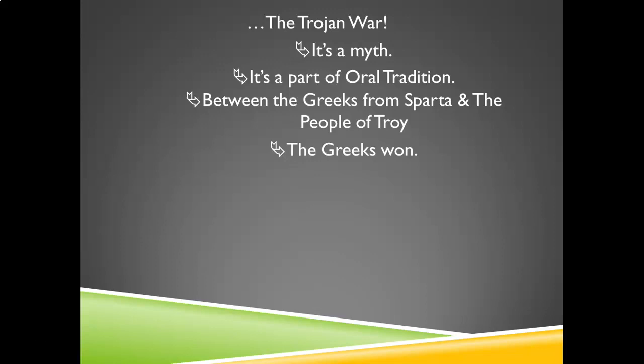We can kind of relate to that because right now we're all locked at home. But can you imagine 10 years? For 10 years they stayed out there with soldiers screaming from the beaches to come outside and bring Helen out. Finally they came up with a strategy — they decided to build this huge wooden horse and leave it on the beach after 10 years, making the Trojans think they'd left a gift and surrendered. They built this enormous wooden horse, it sat on the beach, and all the sailors got on their ships and sailed away except for maybe 30 or 40 soldiers who climbed inside the hollow wooden horse and waited.